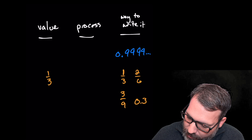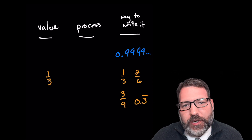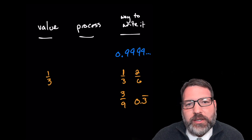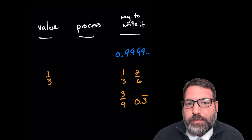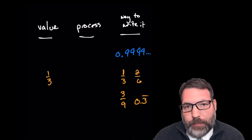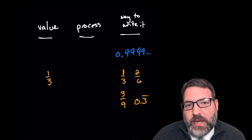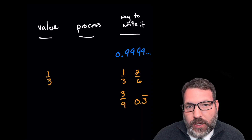You're probably also aware that there's a special way we can write this number down as a decimal — as a base 10 number — and that's where we get this repeating idea: 0.3 repeating.